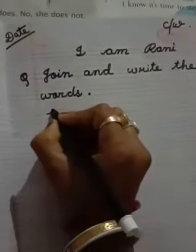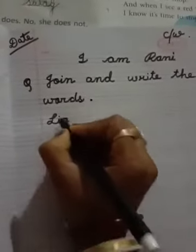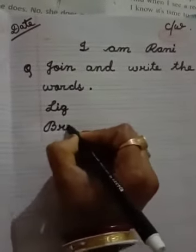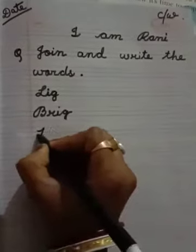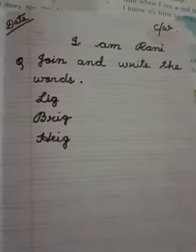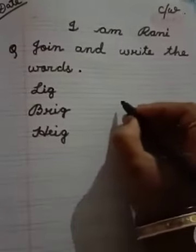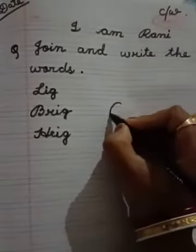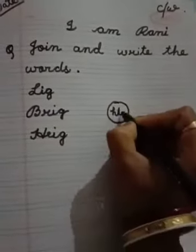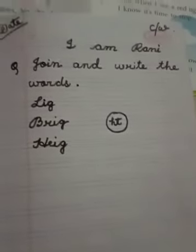Write L-I-G. Written. Then write B-R-I-G. Written. Alright. H-E-I-G. Written. Now give one circle here. And write H-T. Written.